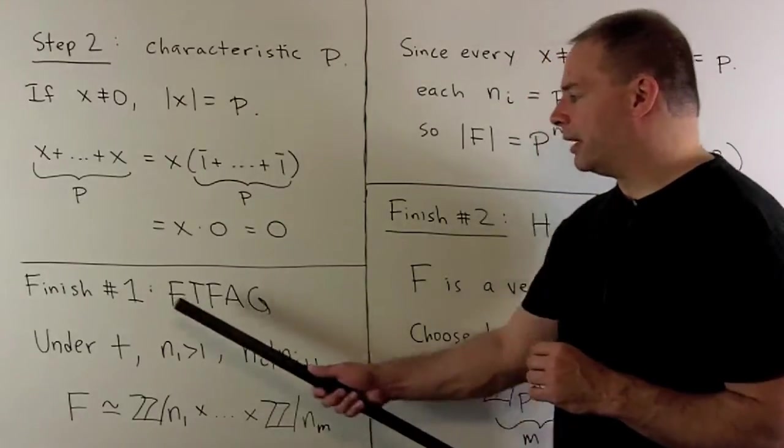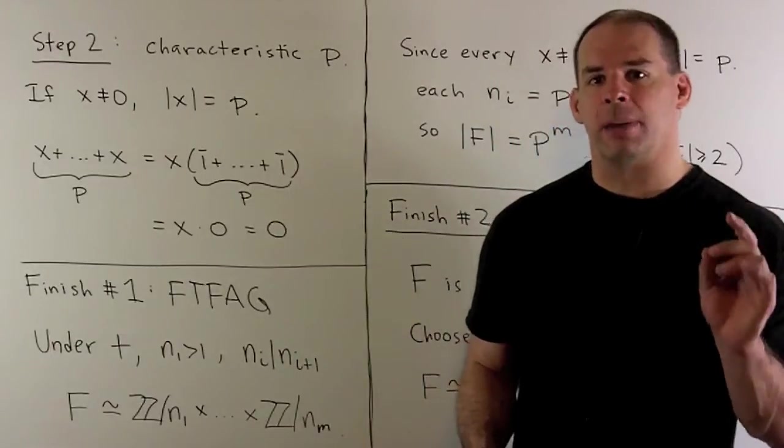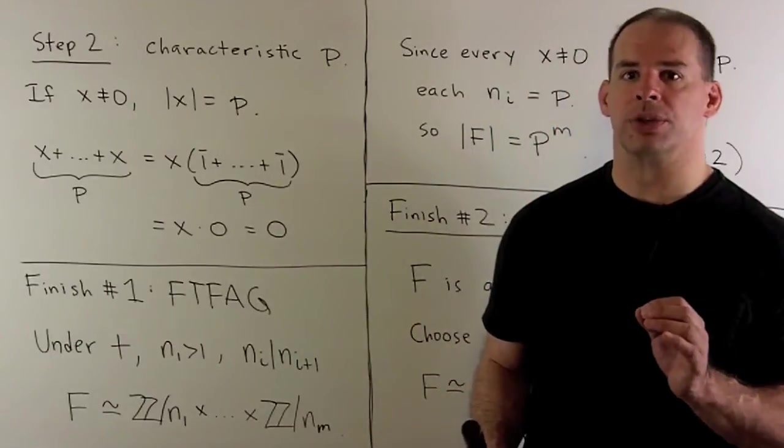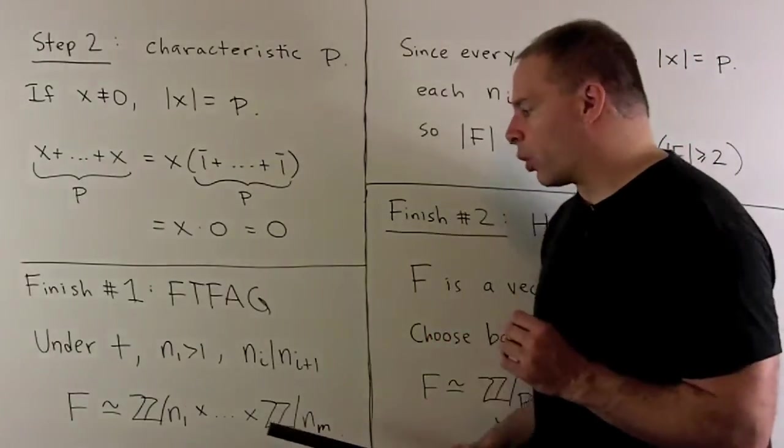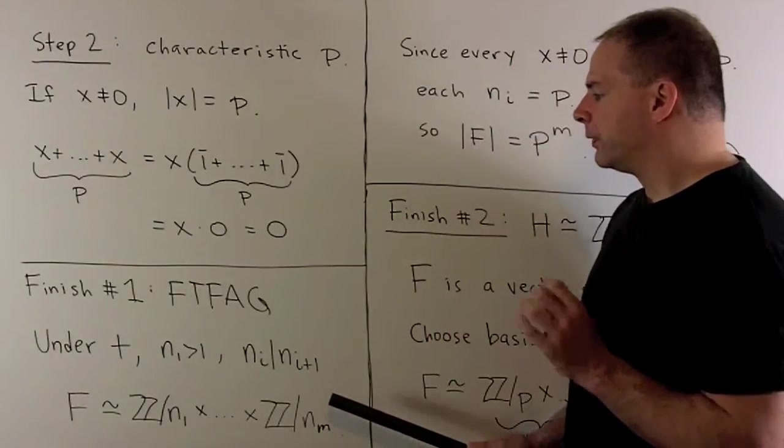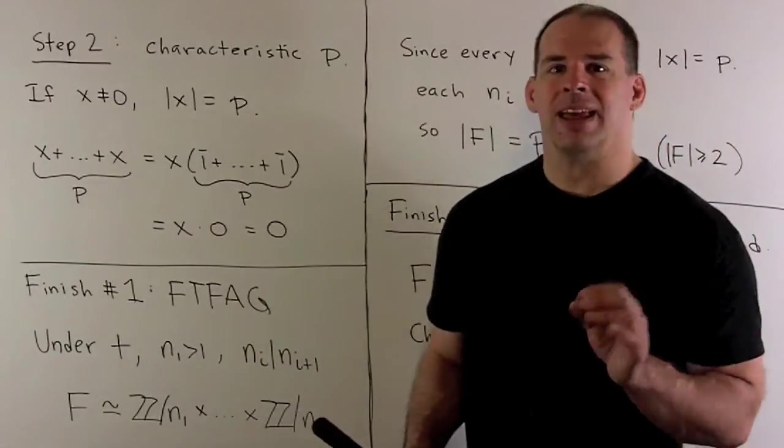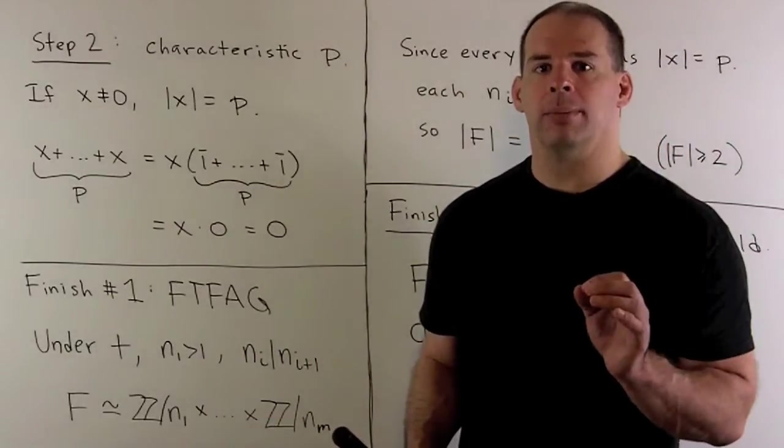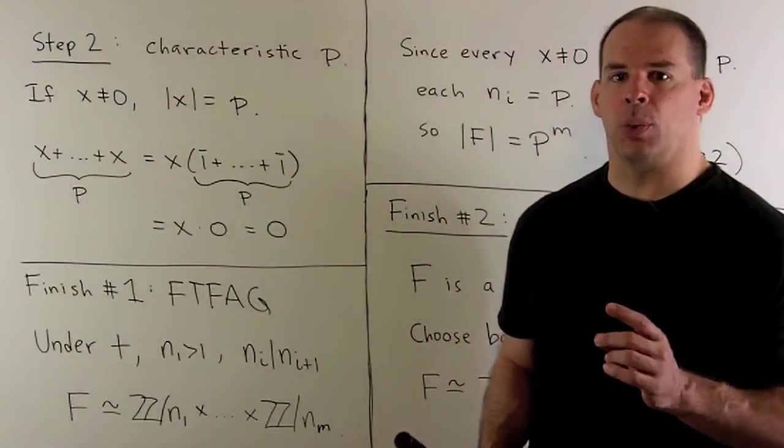So, by our fundamental theorem, we can write F as being isomorphic to a finite product of finite cyclic groups. To organize, the way we can set up the order for each factor. So this will be a sequence of integers, n sub i. n sub one is going to be bigger than one. Then, each n sub i is going to divide n sub i plus one.